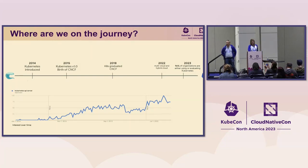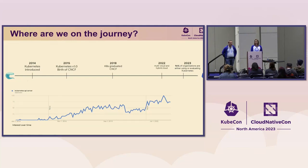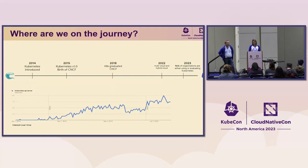Where are we on the journey? Kubernetes started in 2013, 2014, and now after 10 years, we have 83,000 contributors, and 96% of organizations are using Kubernetes or evaluating it. The blue line shows the search term on Google for Kubernetes API server, and you see that it's increased over time. There are many projects in Kubernetes, and API machinery is one of the important SIGs.